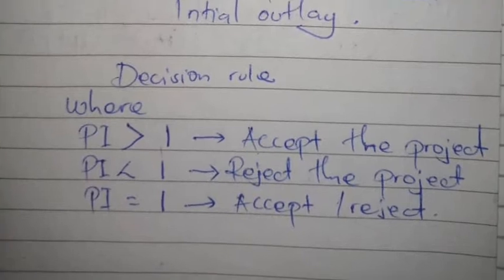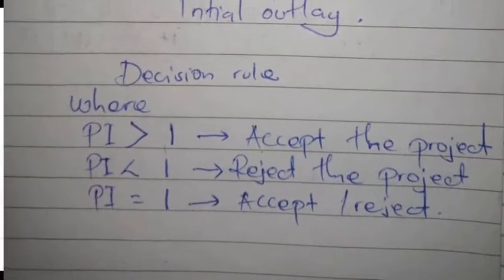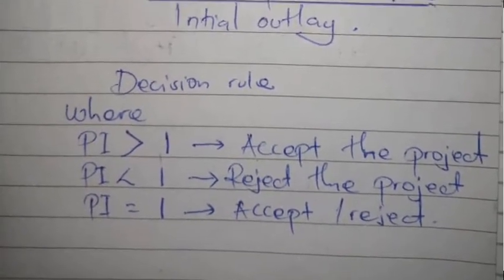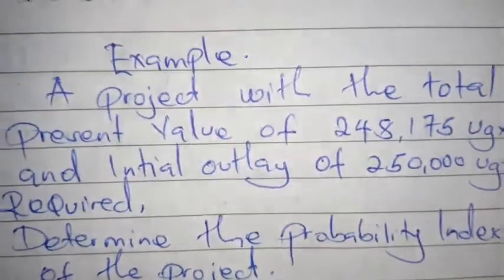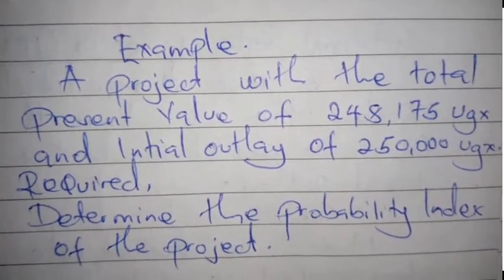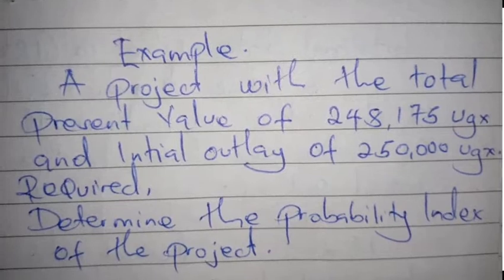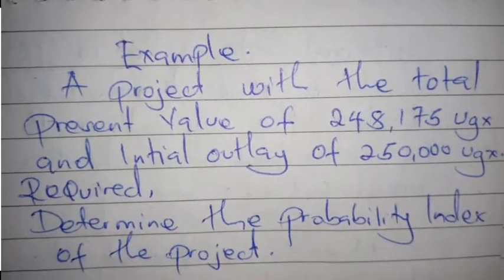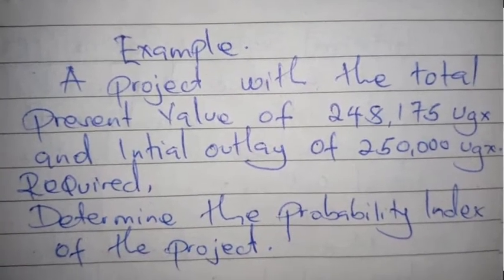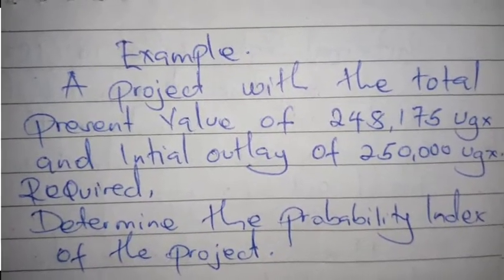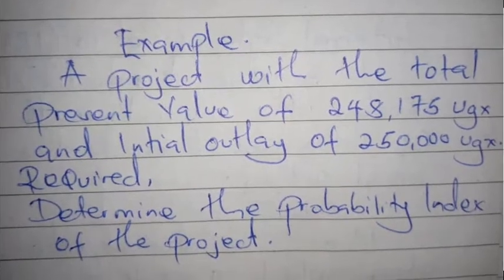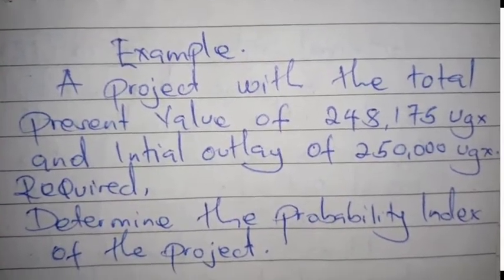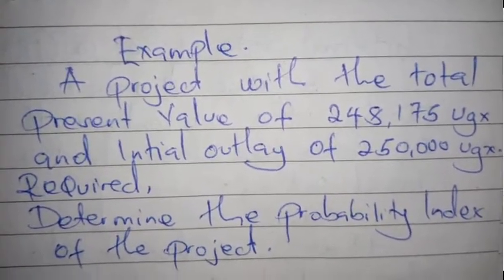Let's have an example. A project with a total present value of 248,175 Ugandan shillings and initial outlay of 250,000. Required: determine the probability index of the project.